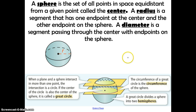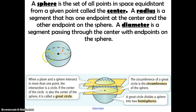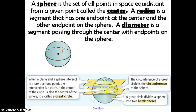A sphere is the set of all points in space equidistant from a given point called the center. A radius is the segment with one endpoint at the center and one endpoint on the sphere. A diameter is the segment that passes through the center with endpoints on the sphere. Diameter and radius work the same as in circles, except now we're in three dimensions. When a plane and a sphere intersect in more than one point, the intersection is a circle. If the center of that circle is also the center of the sphere, it's called a great circle. The circumference of the great circle is the circumference of the sphere, and a great circle divides a sphere into two hemispheres.